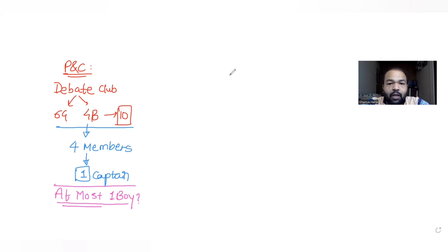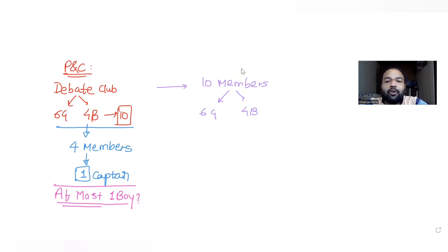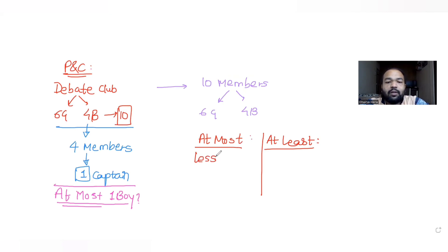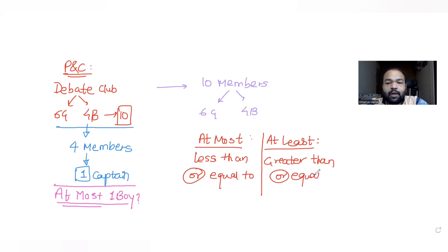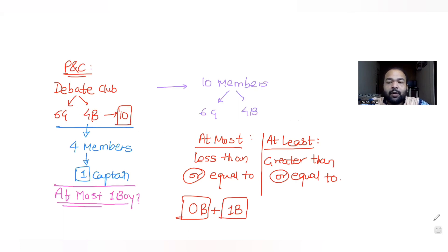There are 10 members in this debate club with six girls and four boys, and we need to form a team of four members which can include at most one boy. The definition of 'at most' means less than or equal to the given number, while 'at least' means greater than or equal to. So at most one boy means we can have zero boys or one boy selected.